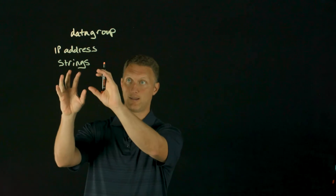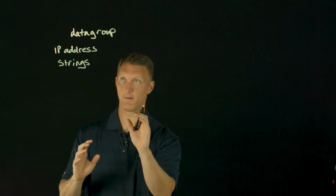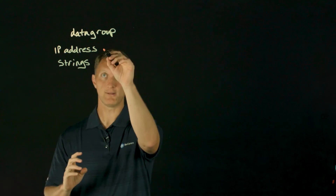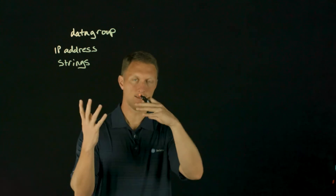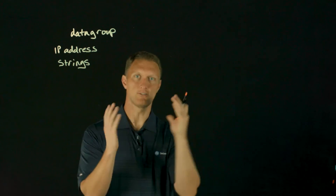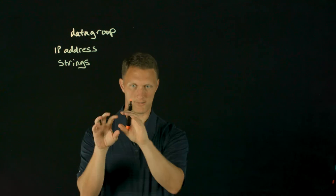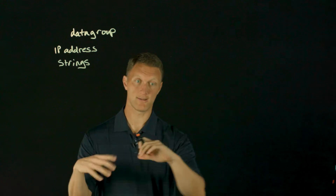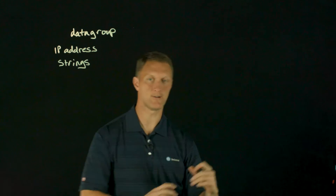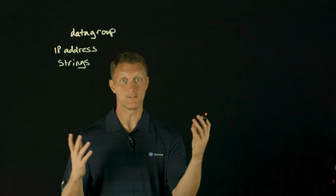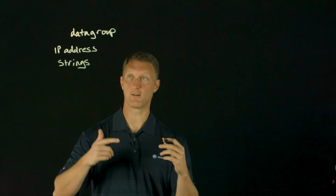We'll talk about strings right now. The IP address type is for when you want to redirect just based on IP address — for example, if someone hits a specific IP address and you want to send them to another IP address, which you can totally do using an IP address based data group.